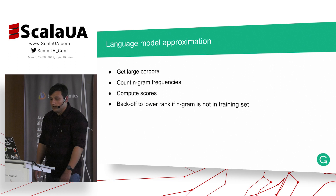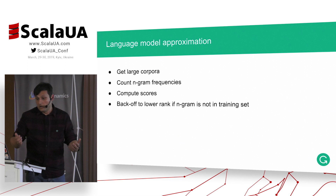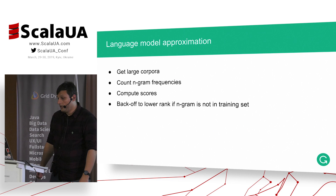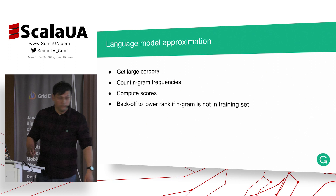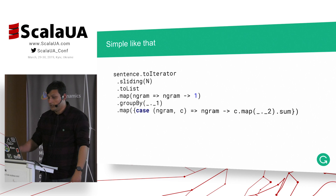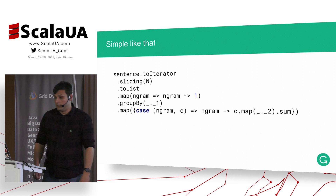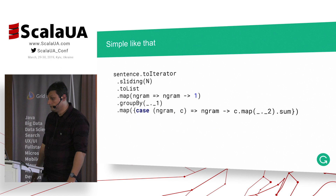This is from the Jurafsky book — a famous reference. So, how do we build a language model approximation? We get a large corpora, count n-gram frequencies, compute some scores, and then do back-off if some n-gram is not in the training set. This can literally be translated to Scala code — it's really simple, it uses a sliding iterator.